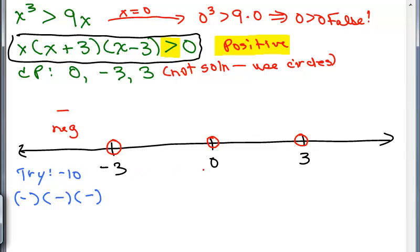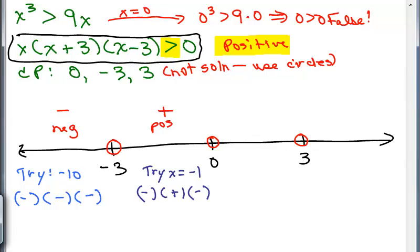Testing x equals negative 1 (between negative 3 and 0): x is negative, (negative 1 plus 3) is positive, (negative 1 minus 3) is negative — negative times positive times negative is positive. So numbers between negative 3 and 0 are solutions. If one test point in an interval works, all numbers in that interval also work.